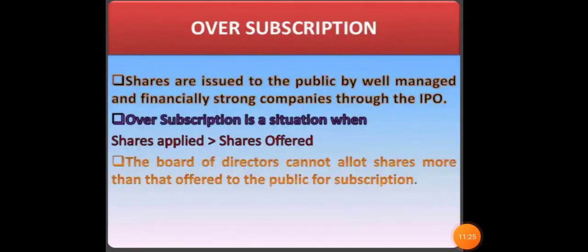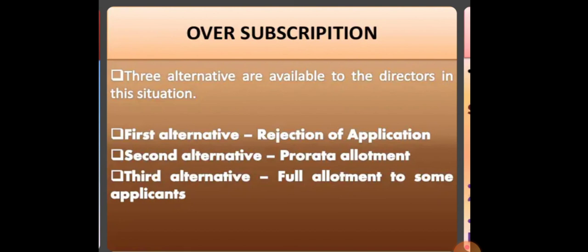Our next topic is over subscription. If we issued 10,000 shares but applications worth 15,000 shares are received, this is over subscription. Over subscription is a situation when shares applied are more than shares offered. Remember, we can never allot more shares than what was issued. Three alternatives are available to directors: rejection of application, pro-rata allotment, and full allotment to some applicants. A detailed updated video on over subscription is also available in the playlist.